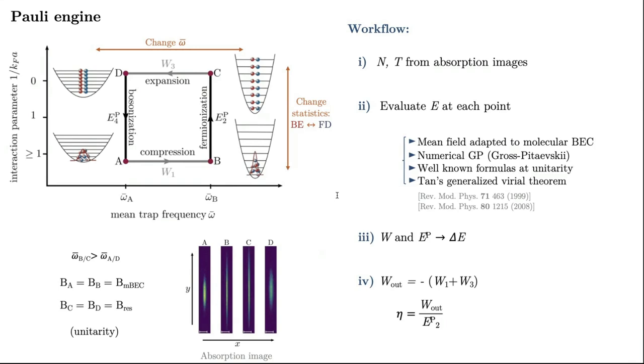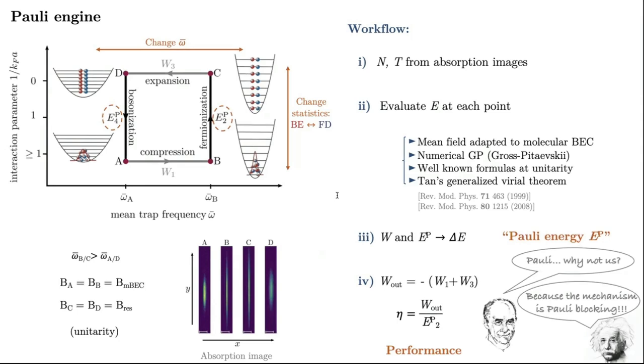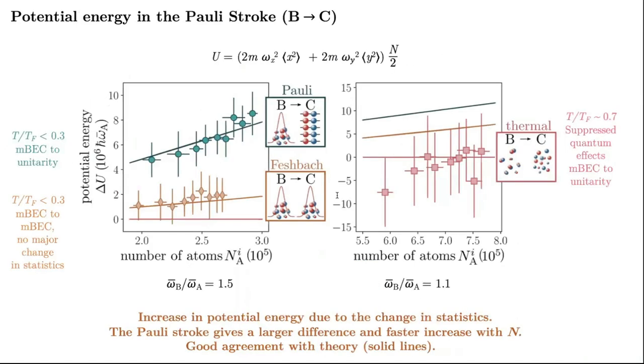Once we have the energy at each point, we can compute the energy for each stroke. We can compute the work at each work stroke. And, the energy difference obtained when we induce this change in statistics, we call the Pauli energy, because the underlying mechanism is Pauli exclusion. And, finally, we can quantify the performance of the engine with the work output and the efficiency.